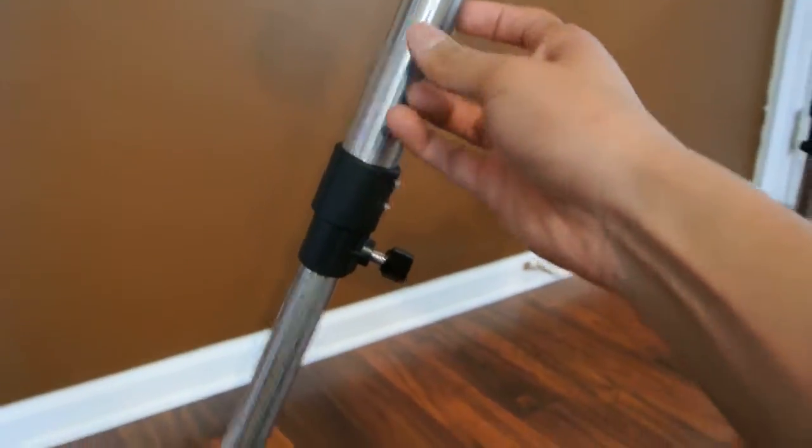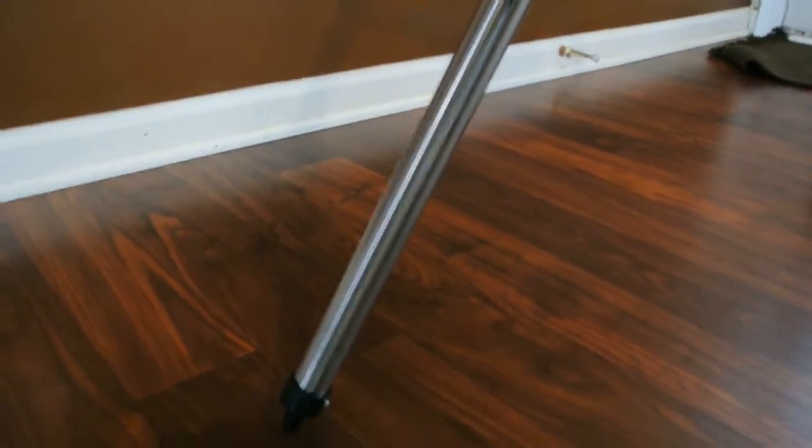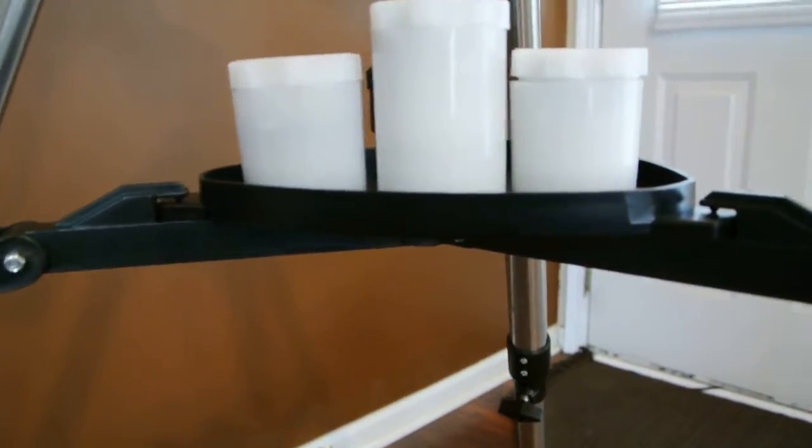I'll show you the tripod legs. They're made out of aluminum, they're pretty sturdy so you don't have to worry about any movement from the tripod. And when you're moving the telescope around it's very important to have a sturdy tripod and this one's pretty well built.